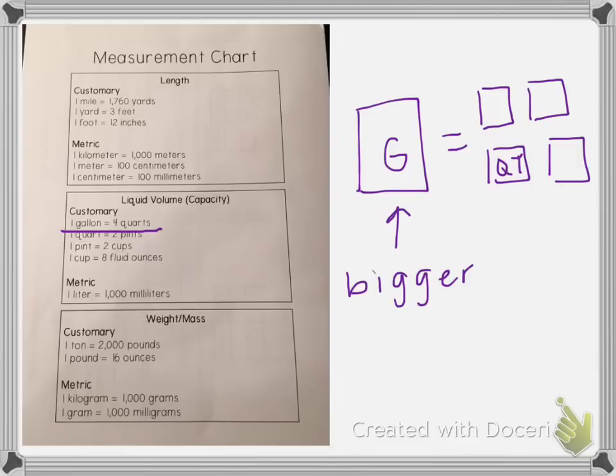So let's just do another one. We were going from, we had 24 inches and we wanted to know how many feet. So we're going from inches to feet. So we have inches and feet on our chart and one foot equals 12 inches. So I know that an inch is smaller than a foot.